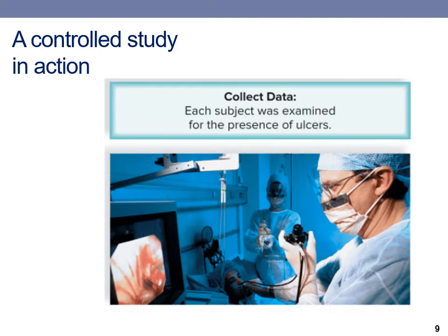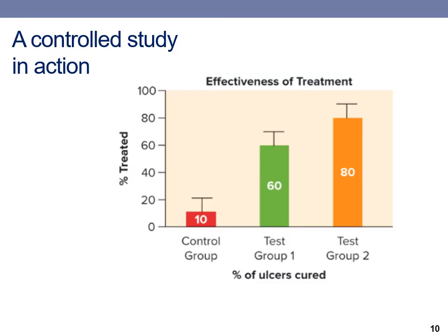After taking the medication, each test subject was examined for the presence of ulcers and the results were recorded. This table shows the percent of people treated and their response to the medications. Only 10% of the people in the control group — who received the placebo — had their ulcers cured. Test group 1 received antibiotic A, and 60% of those people had their ulcers cured. In test group 2, who received antibiotic B, 80% had their ulcers cured. These results suggest that antibiotic B is more effective than antibiotic A.